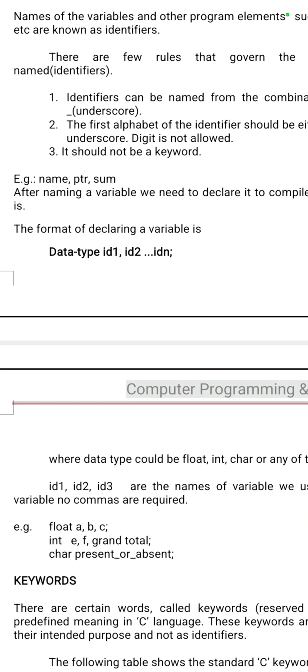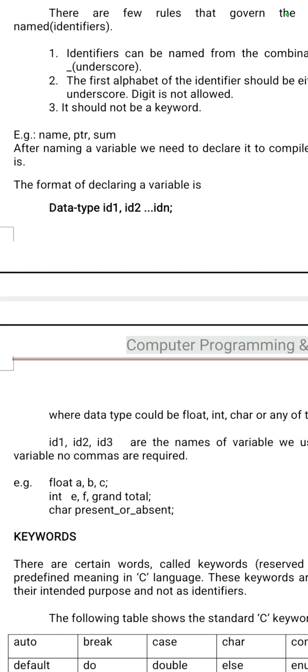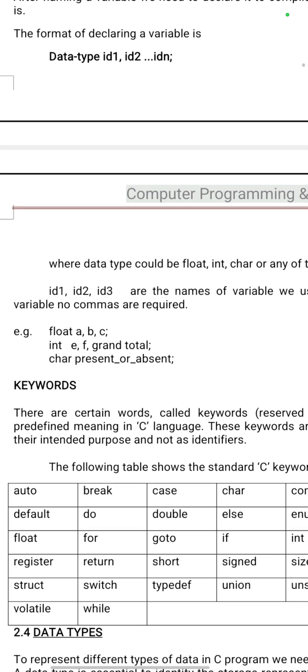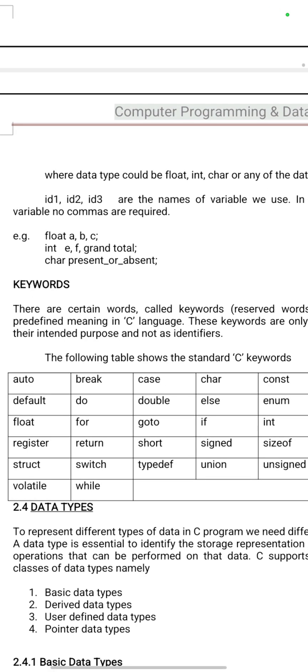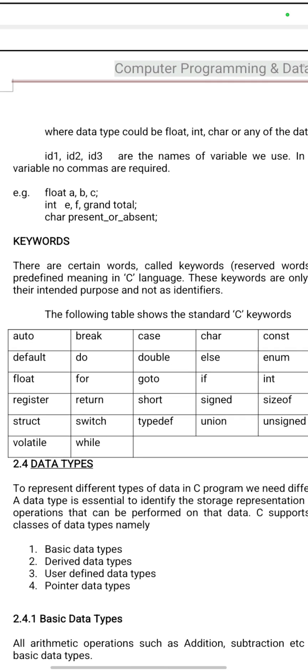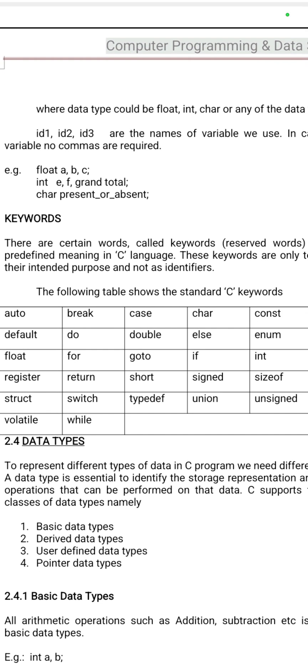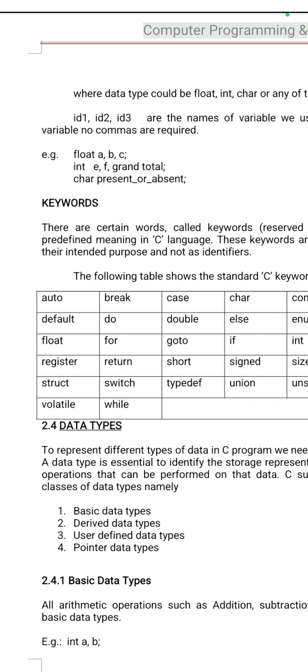Then data types — what is a data type? It means the type of the data. Keywords are also called reserved words. Keywords have some special meaning — those words cannot be used as variable names.